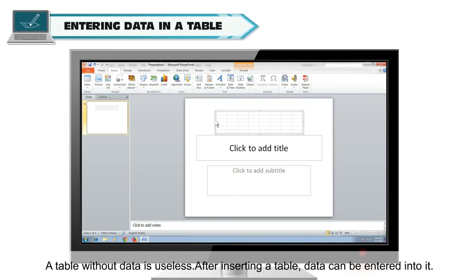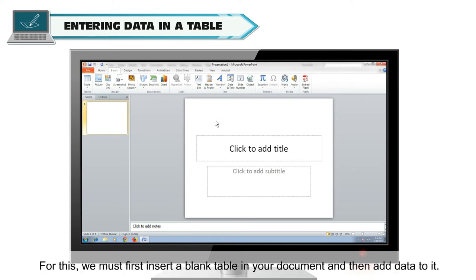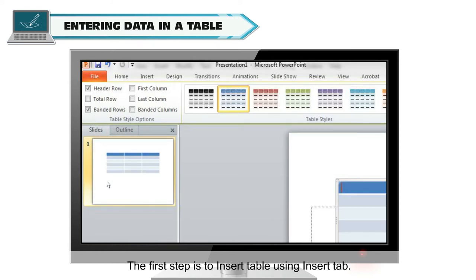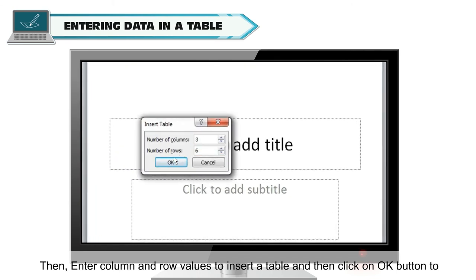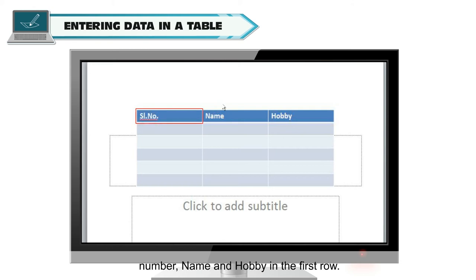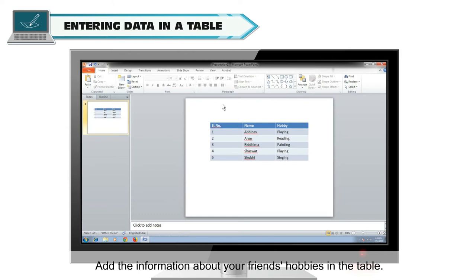A table without data is useless. After inserting a table, data can be entered into it. Let us create a table that gives information about the hobbies of five of your friends. First, insert a blank table and then add data to it. Insert the table using the Insert tab, then enter column and row values and click OK. Take your mouse to the first cell and click on it. Add the headings — serial number, name, and hobby — in the first row, then add the information about your friends' hobbies in the table.